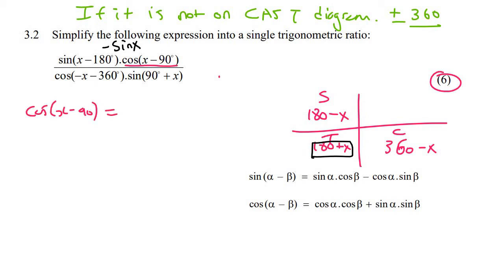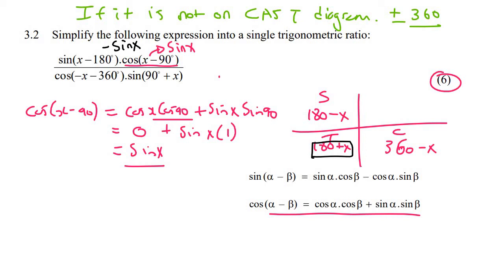So x minus 90, and that's this one. So it just becomes cos x cos 90 plus sin x sin 90. Now cos 90 is 0, so that just all falls away. sin x and then sin 90 is 1, so this whole answer just becomes sin x. How cool is that? We just hacked the system. And so that's sin x over there.